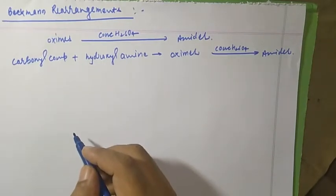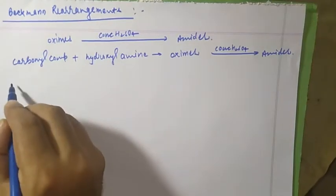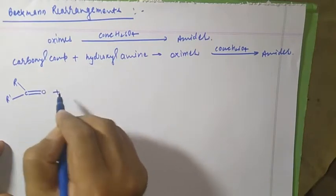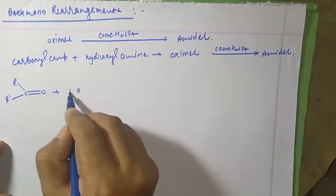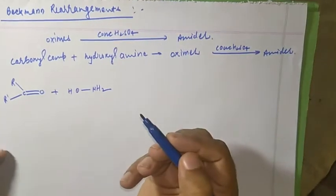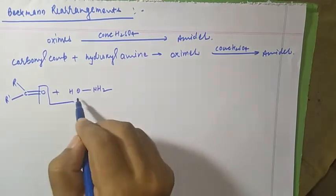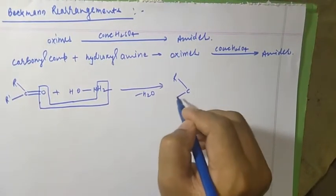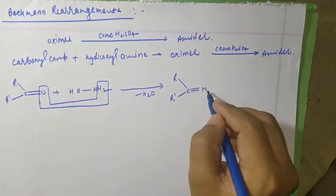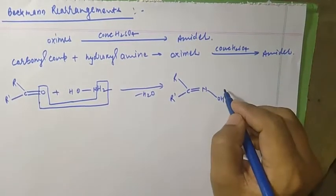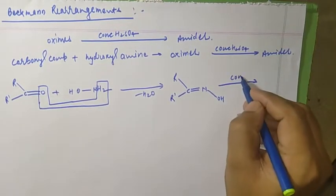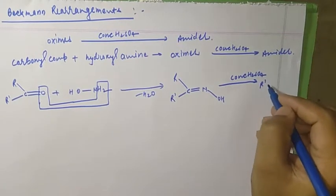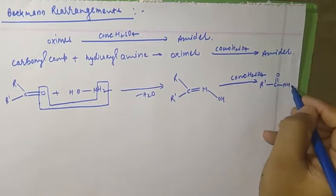Now see the examples. Suppose I am taking a ketone: R double bond O. If you react it with hydroxylamine (NH2OH), you get R-C(=N-OH)-R' after losing H2O — that is the oxime. Now if you take concentrated H2SO4, the compound formed will be R'-C(=O)-NH-R, which is the amide.